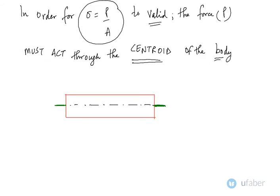Now let's look at this condition. It says that in order for this equation to be valid, the force acting must act through the center of the body. So just have a look at this prismatic bar. This is the centroidal axis.